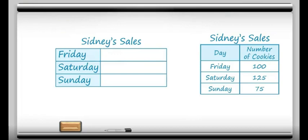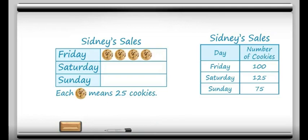What we need to do is make each cookie worth more than one cookie. With the values of 100, 125, and 75, if each cookie were to represent 25 cookies, that would make things nice and pretty. To count 100 by twenty-fives: 25, 50, 75, 100. On Saturday it's 125, so that's just one extra cookie. And on Sunday it's 75, so 25, 50, 75. And just like that, you've made a picture graph. Good job.